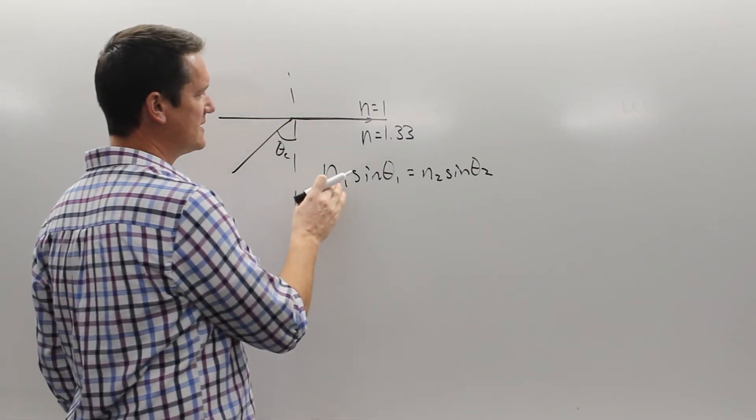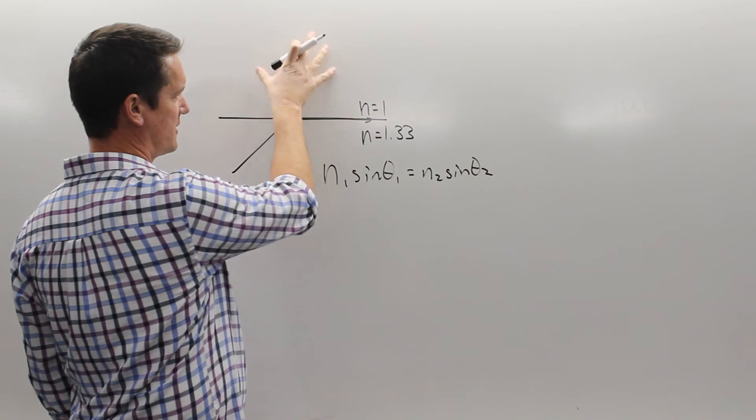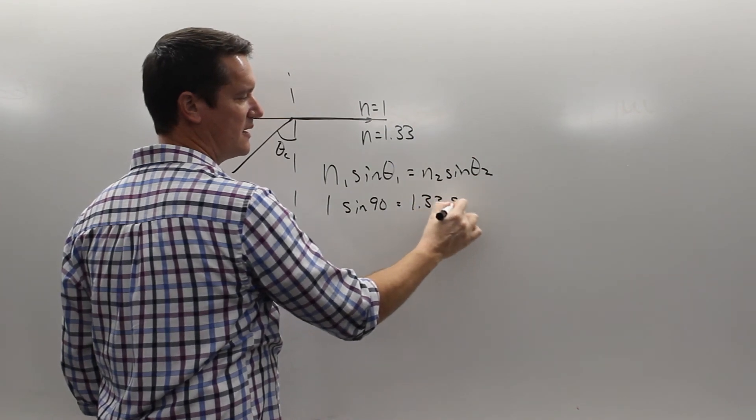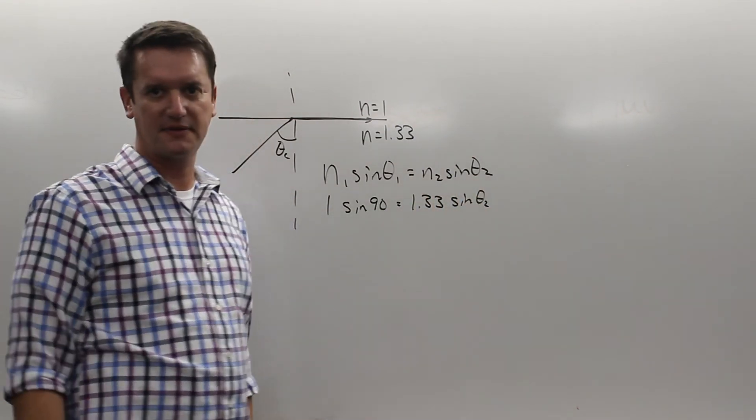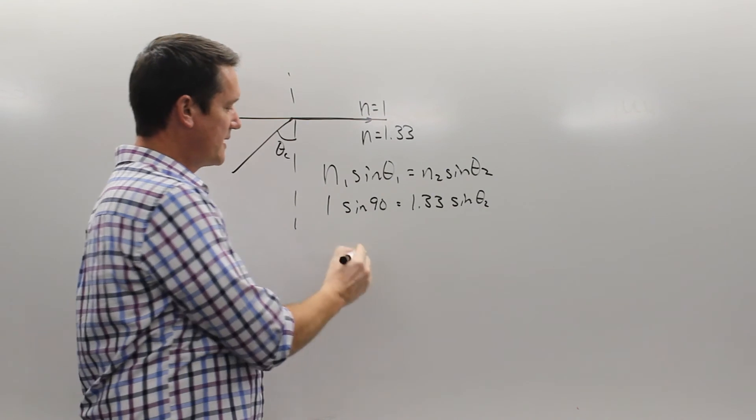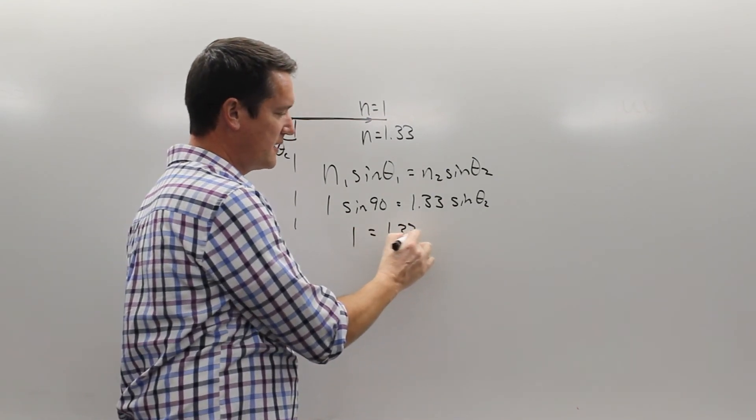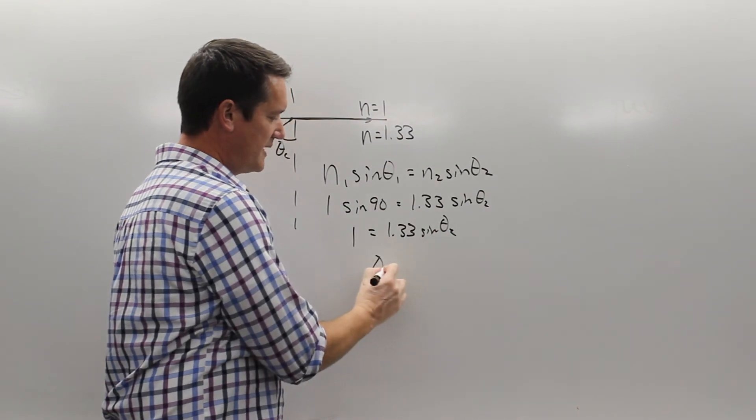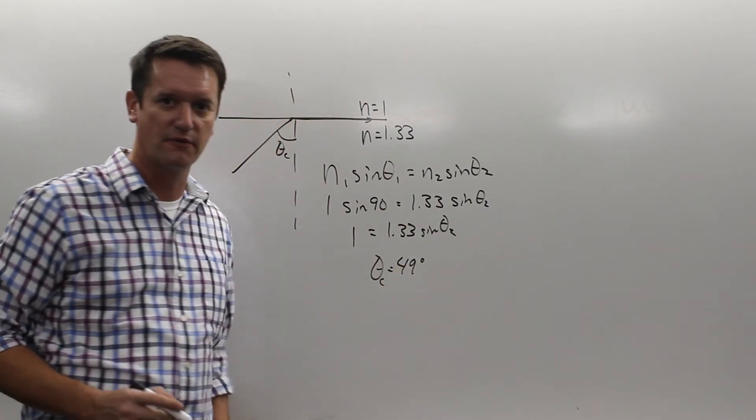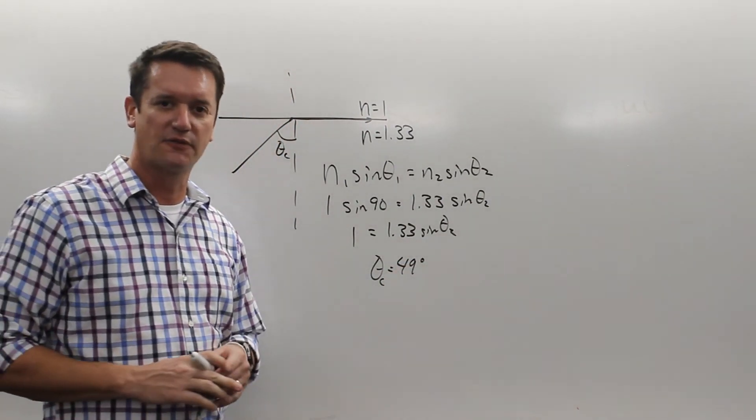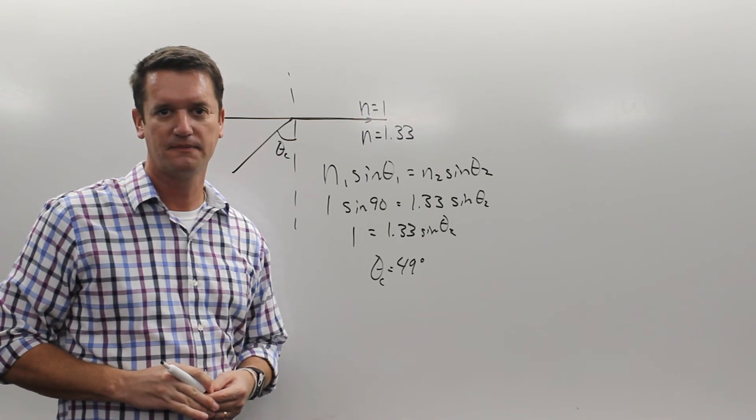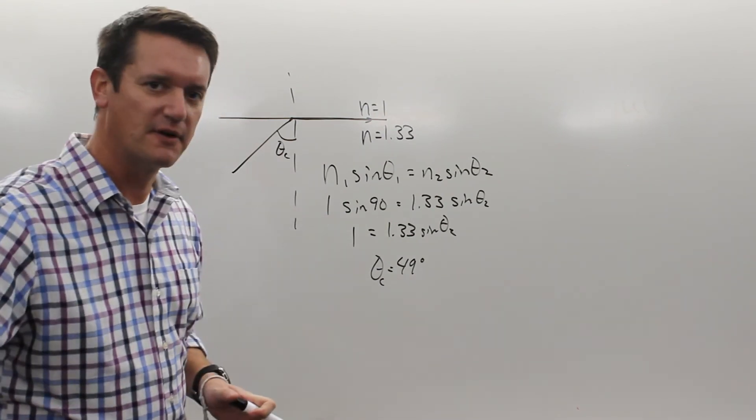So what we have here is N1 sin theta1. 1 times the sin of 90 is equal to 1.33 times the sin of theta2. Now the sin of 90 is actually 1. 1 times 1, because that's the index of refraction of air. So we end up with 1 is equal to 1.33 times the sin of theta2. When we calculate that out, we get theta, our critical angle, is going to be 49 degrees for water. So it's about 48, 49 degrees for water. In terms of anything beyond that, you're not going to be able to see outside of the water. Now that's for water.